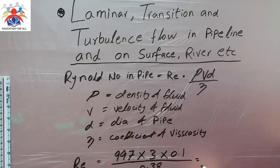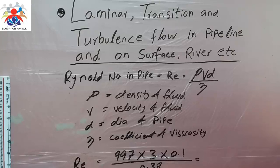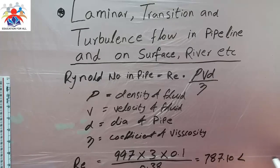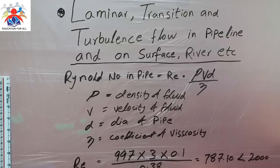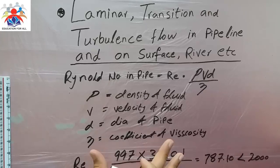So the Reynolds number would be 999 multiplied by 3 multiplied by 0.1 divided by 0.38. The Reynolds number we get is 787.10, which is less than 2000, so it means we have laminar flow. This example is for the pipeline.